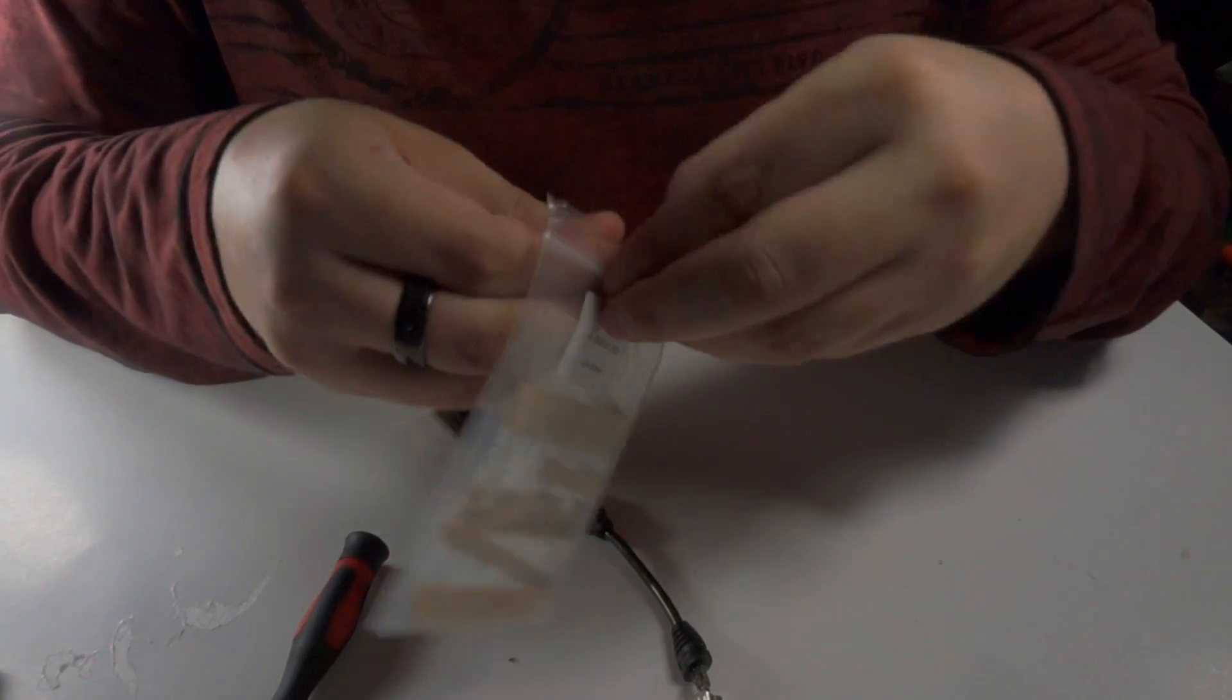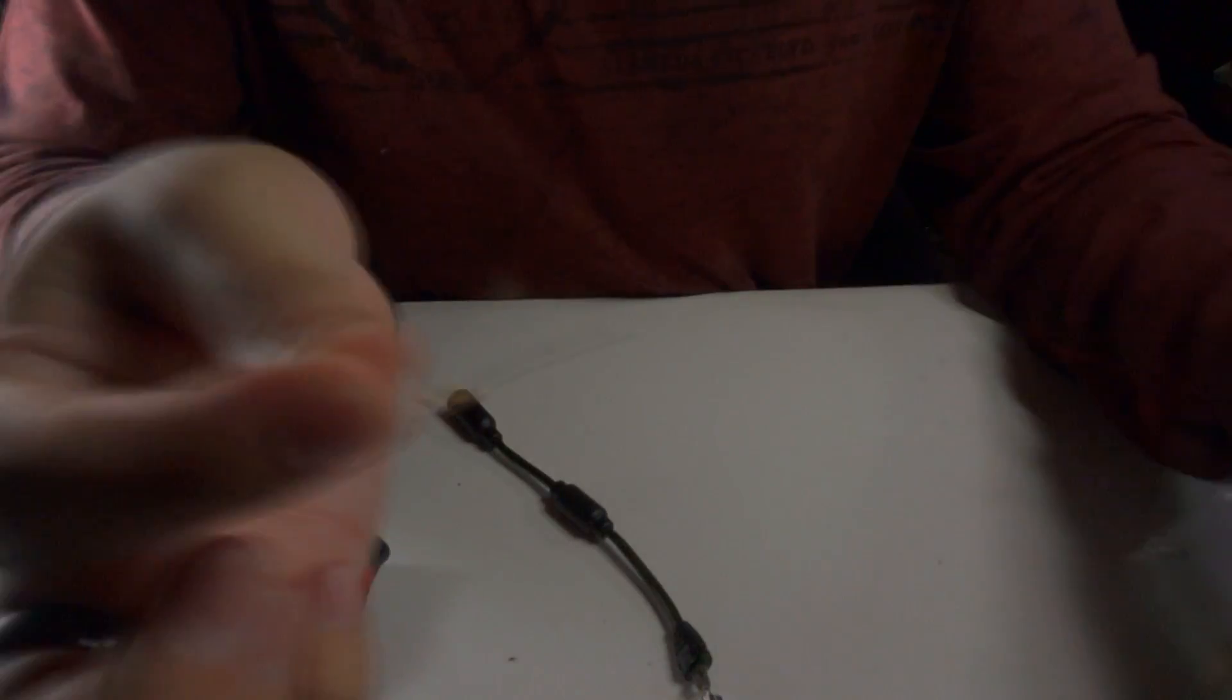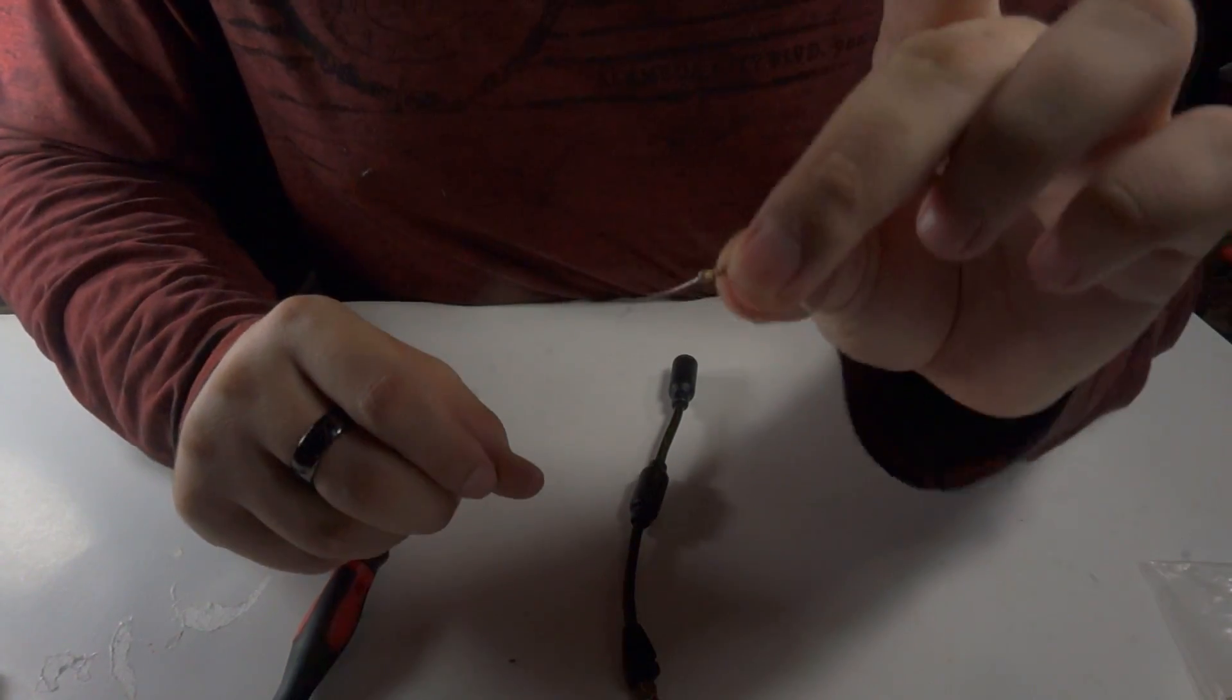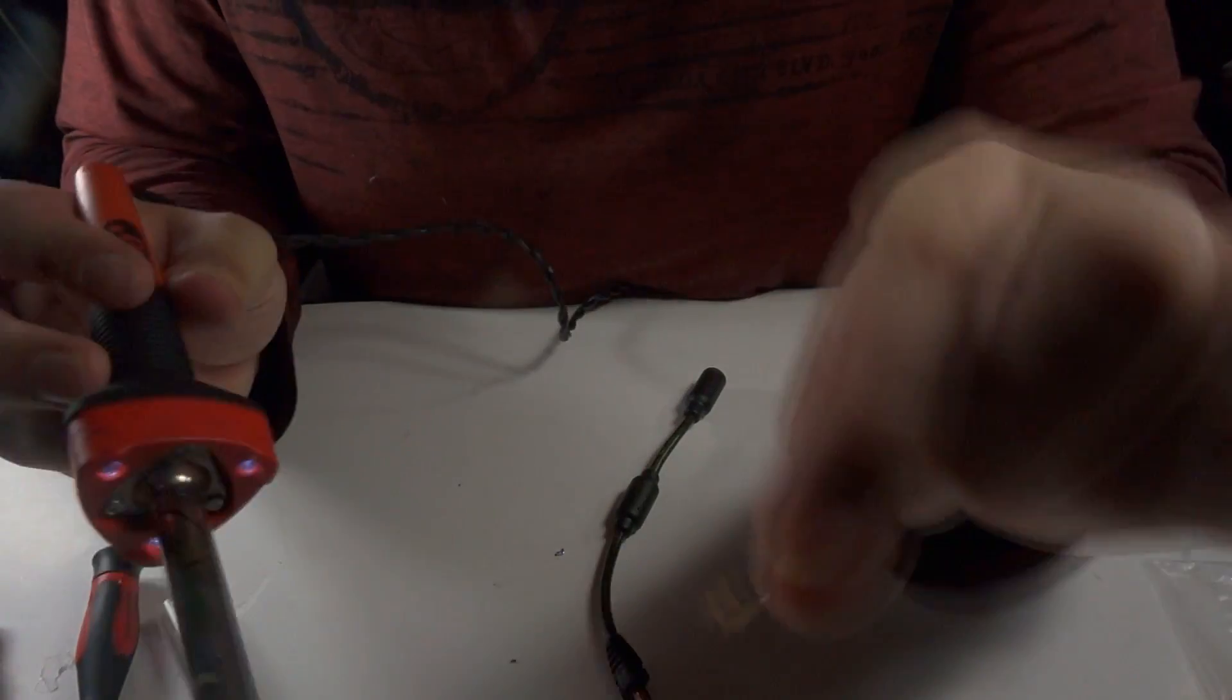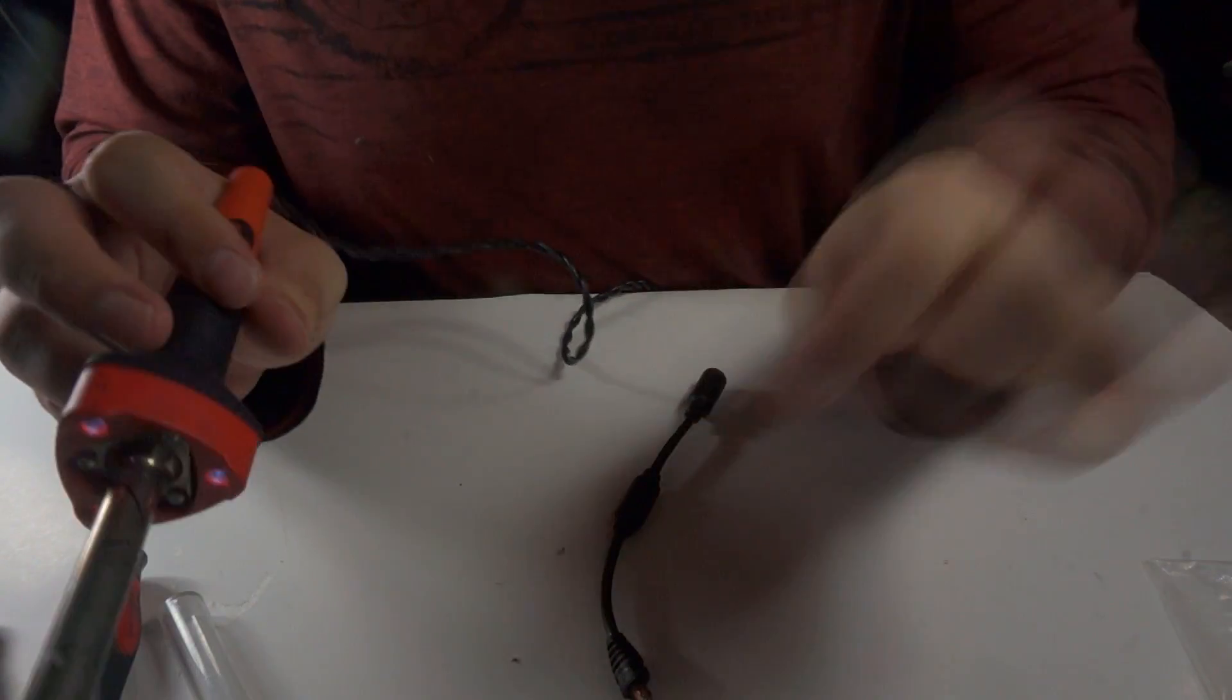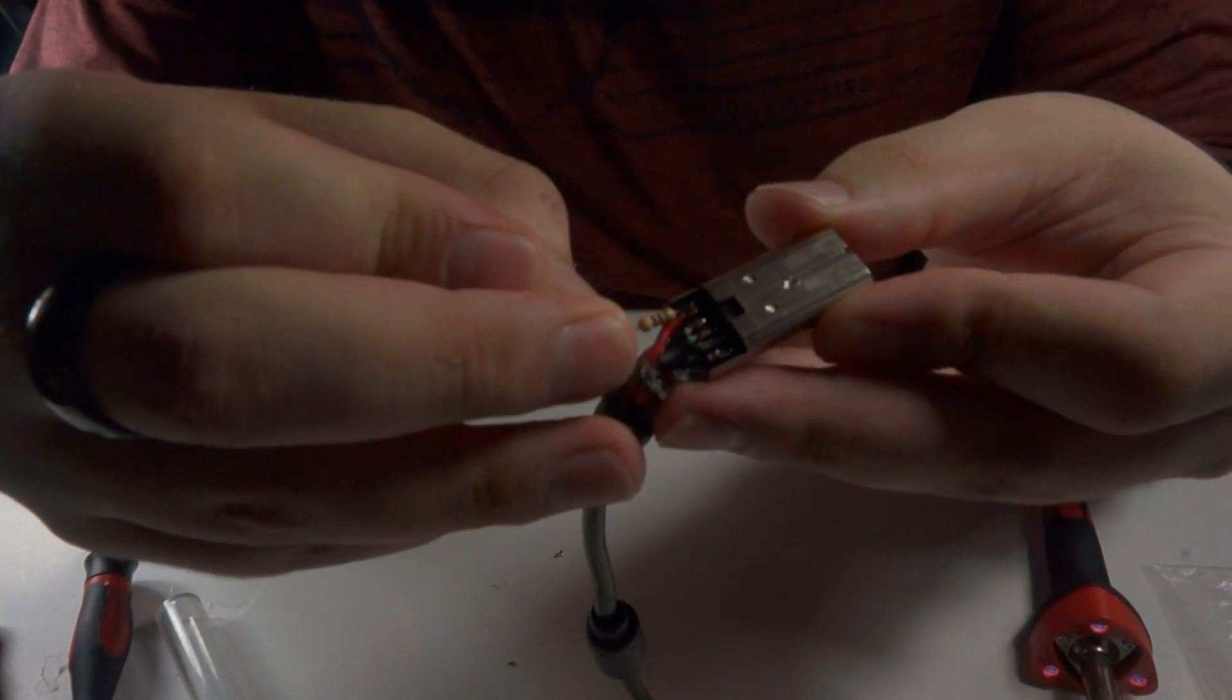So let's start off by grabbing our resistors and go ahead and get one out and go ahead and tin a small section of one side. So I'm also going to clip down one side. Okay, so after you've tinned one side of your resistor, you're going to want to attach this resistor to the red pad on the connector. So go ahead and just solder it on like so.